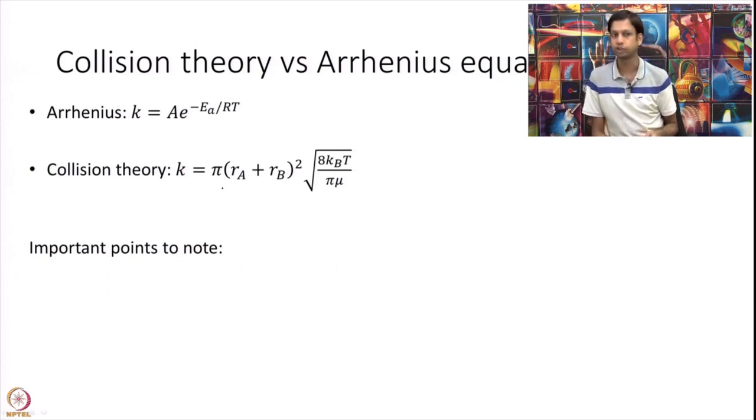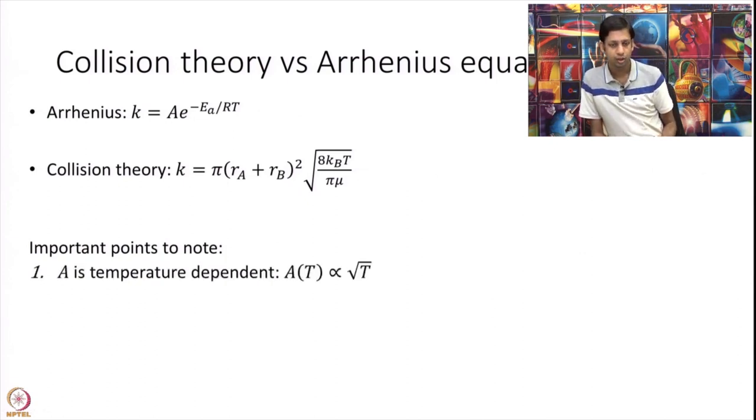But let us take a broader picture. Arrhenius and Wendt had earlier written in a more general equation: K is equal to A times e to the power of minus Ea over RT. And this was found to be experimentally true. So we know this equation is more or less true. Do these two equations now compare? That is the question.